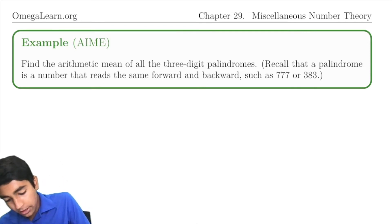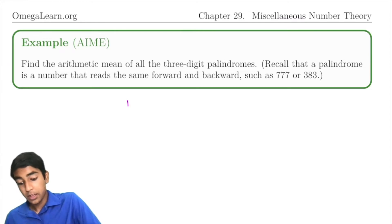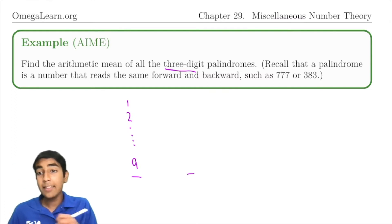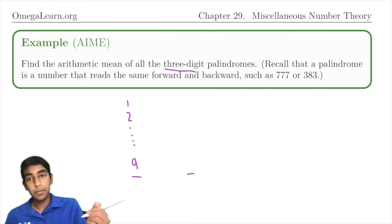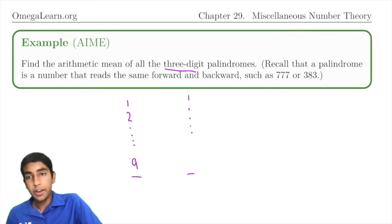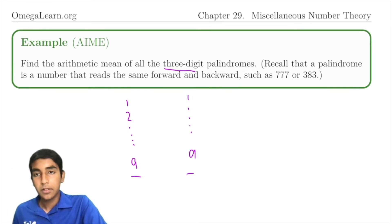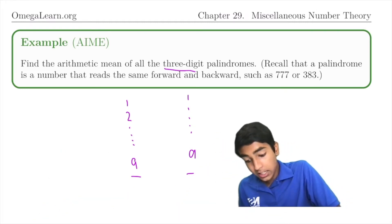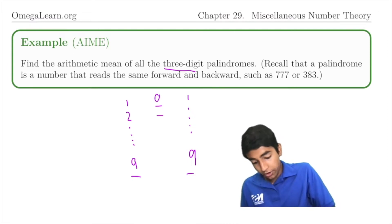The first digit can't be zero, it's a three-digit number. It can be anything from 1 to 9. Now, because it's a palindrome, the last digit must be equal to the first digit.